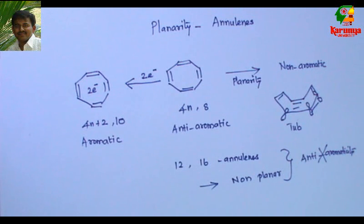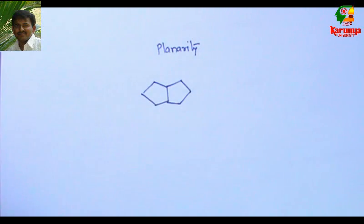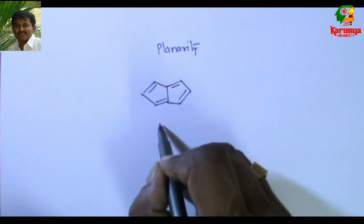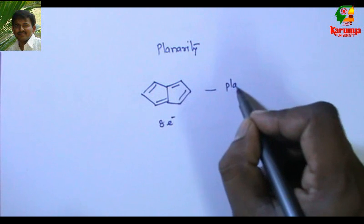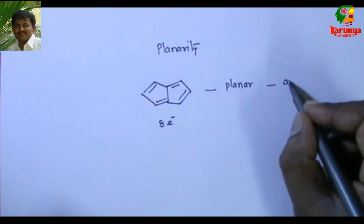When you add two electrons or remove two electrons from these systems, the same molecule becomes planar and attains aromaticity. Consider a bicyclic compound with 8 pi electrons. Since it is bicyclic, it cannot freely rotate and cannot change its structure, so it becomes planar. It is cyclic, planar, and the number of electrons involved in delocalization is a multiple of 4. So this compound is anti-aromatic.